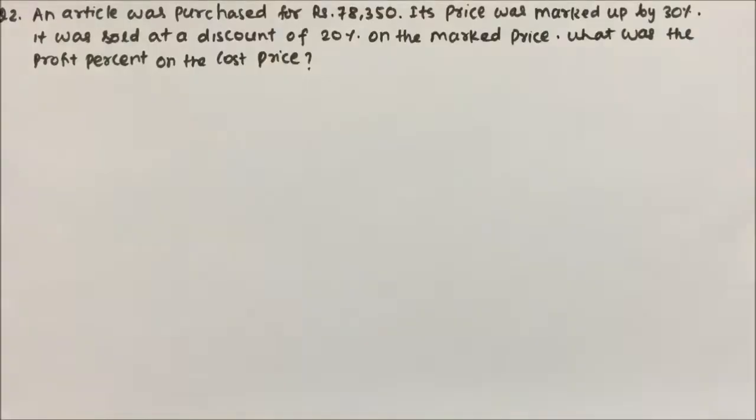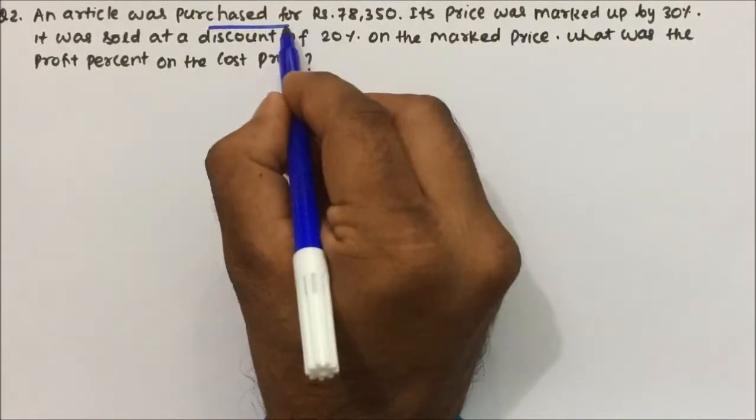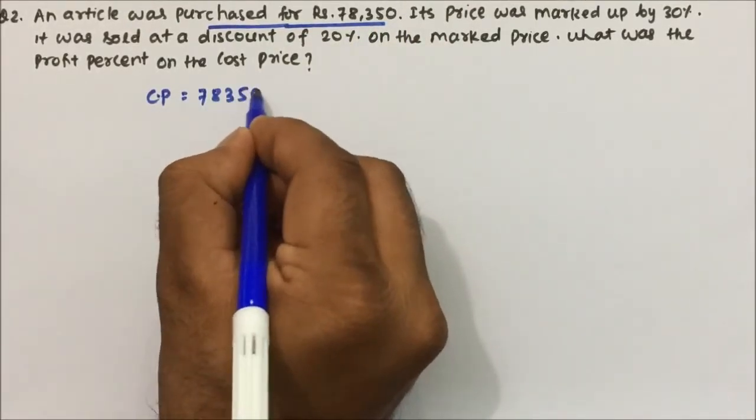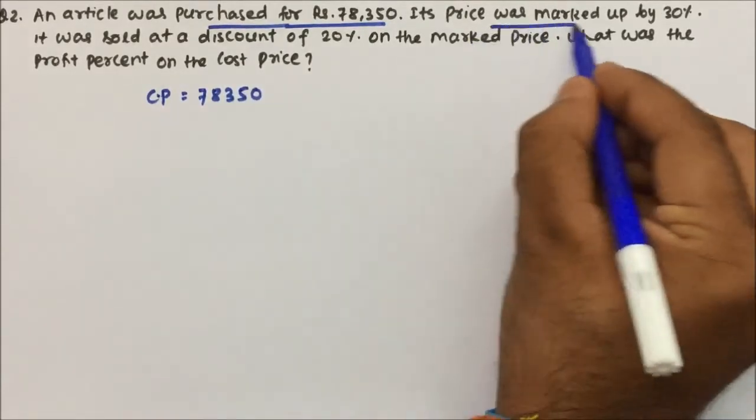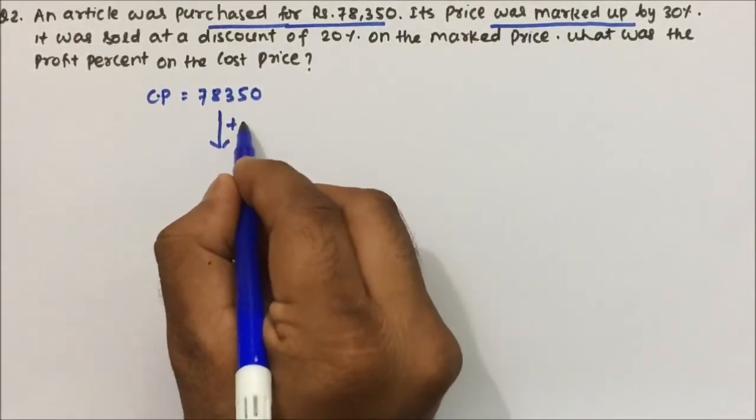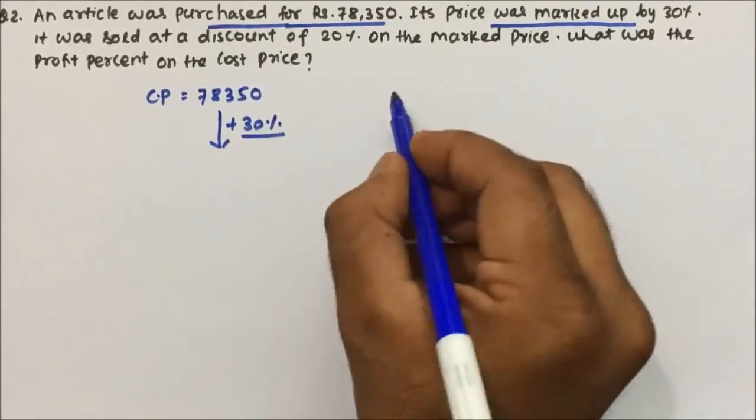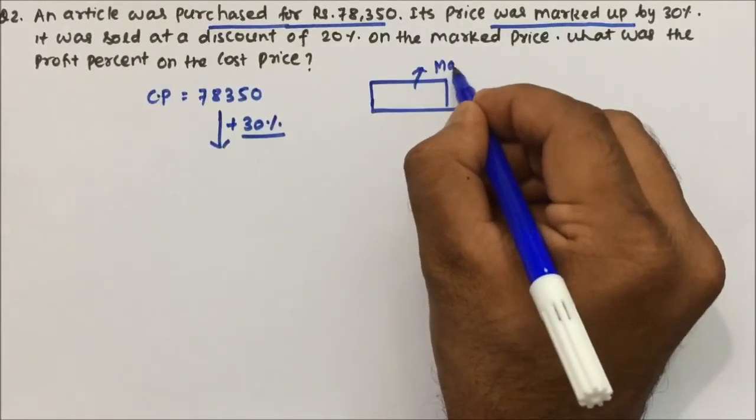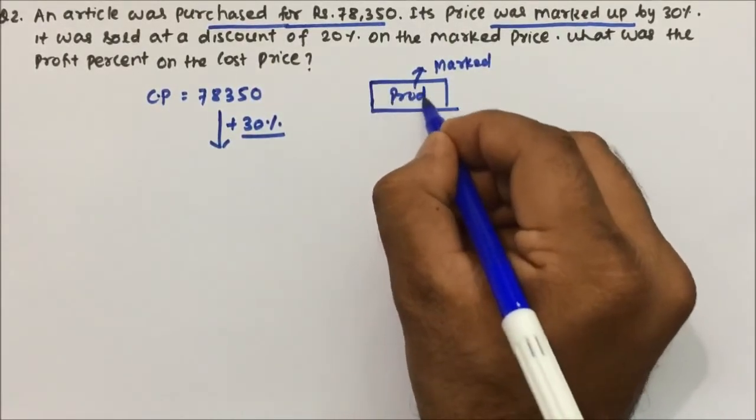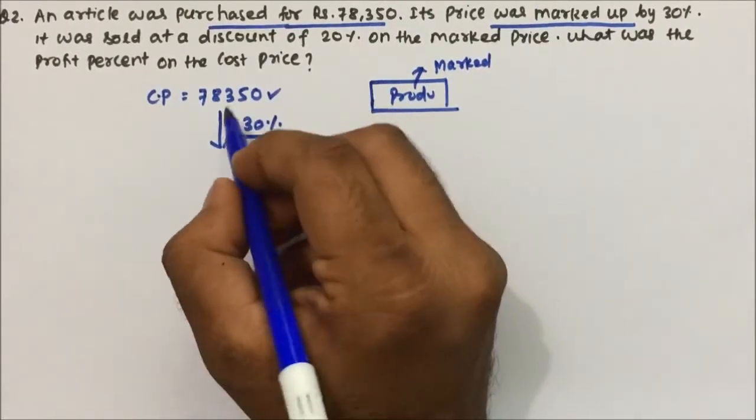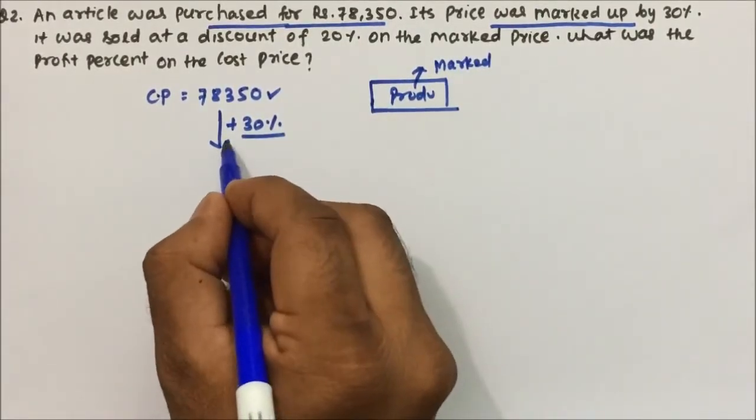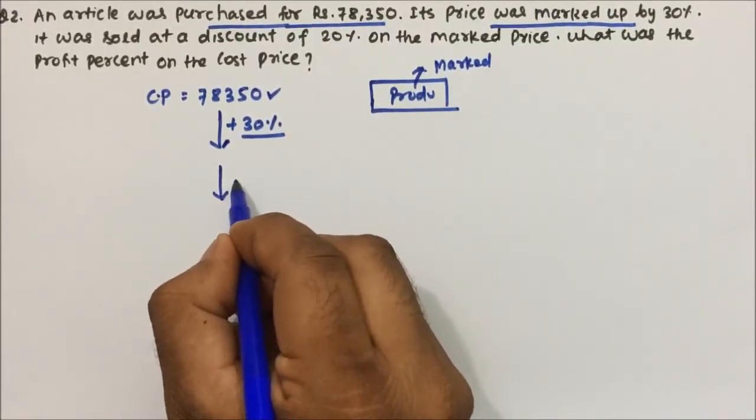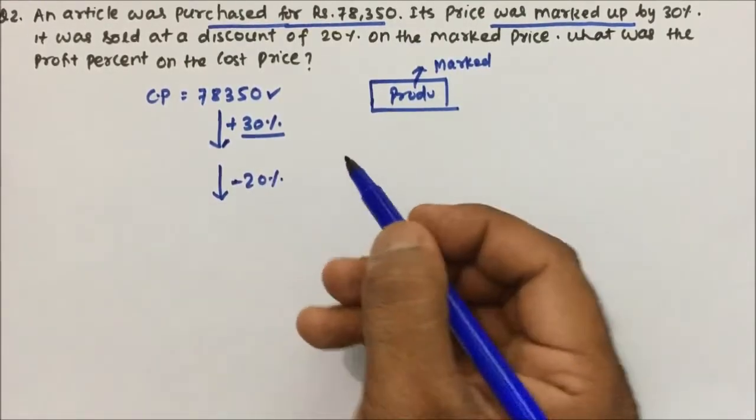Question number 2, an article was purchased for Rs. 78,350. So what was the cost price? Cost price was 78,350. Its price was marked up by 30%. So basically he wanted to earn a profit of 30%. Marked up means the price which is printed or the price which is marked on the product. So the cost price was 78,350 rupees and he wanted to earn 30% profit. So what he did? He put 30% more price. And again, he is giving a discount of 20%. So discount will be always minus.